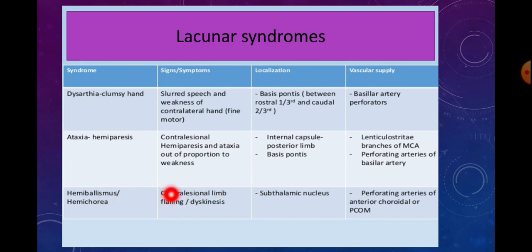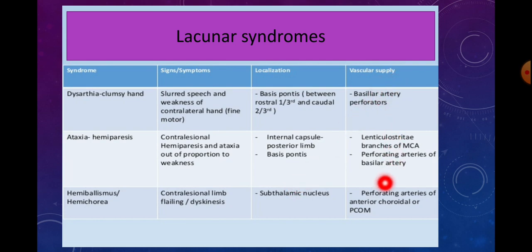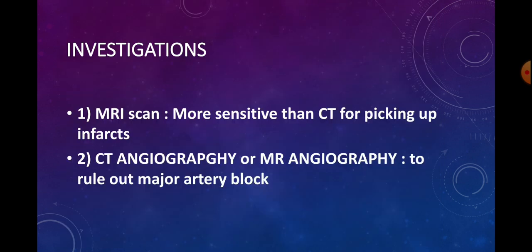Hemiballismus or hemichorea: the symptoms are contralateral limb flailing and dyskinesia. The localization is the subthalamic nucleus and vascular supply is perforating arteries of the anterior choroidal artery. For investigations, an MRI scan is preferred because it is much more sensitive in picking up early infarcts.